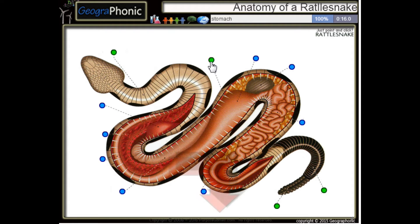This is a rib, a single rib. This is the stomach of the rattlesnake. This is its liver. Here we see the heart.